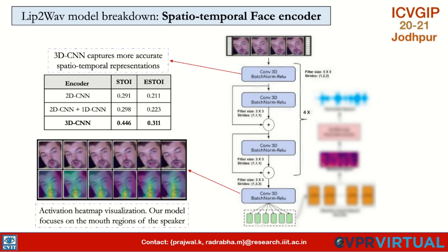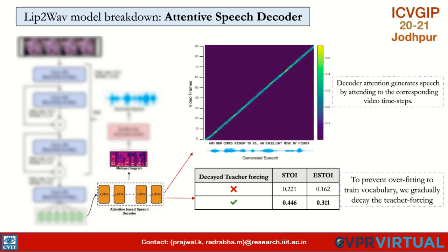The face encoder consists of 3D CNN layers that encode the lip movement information. We also tried other encoders including 1D CNN and 2D CNN, both of which performed inferior to the 3D CNN. An ablation study shows that our encoder attends to the lip and jaw region of a speaker while generating speech. We pass the encoded features to an attention-based decoder taken from the state-of-the-art TTS network Tacotron 2.